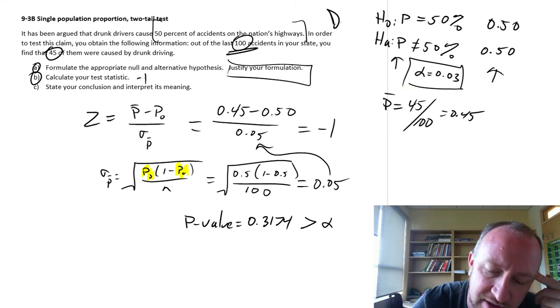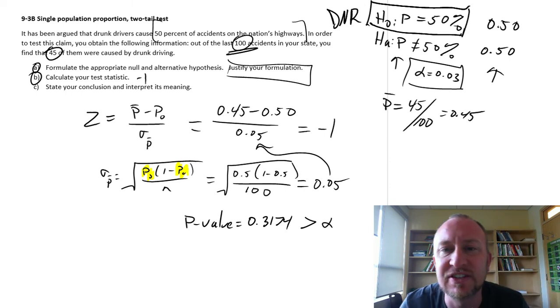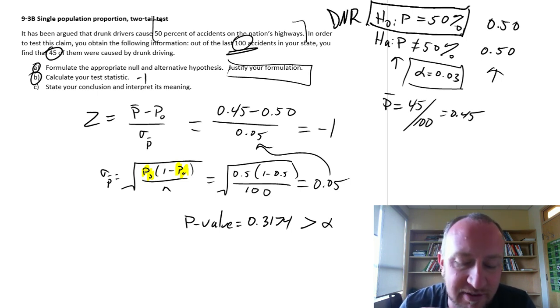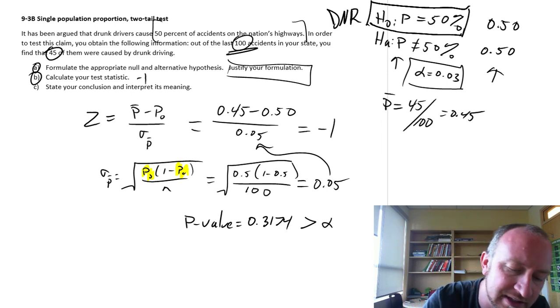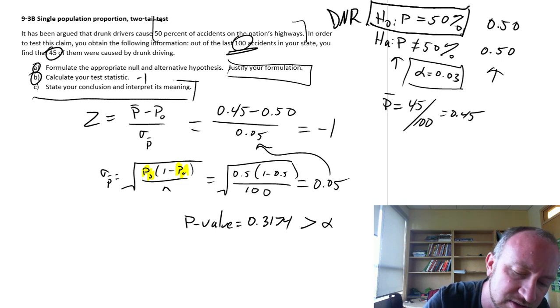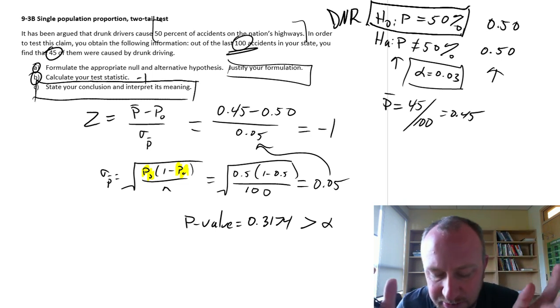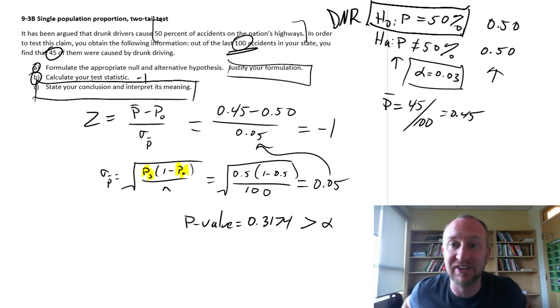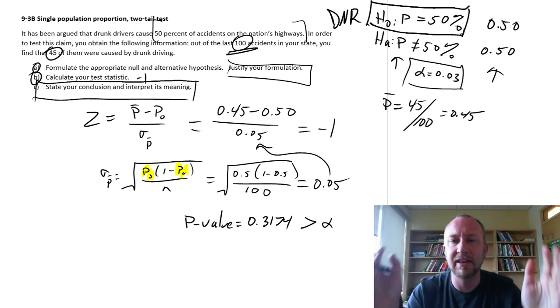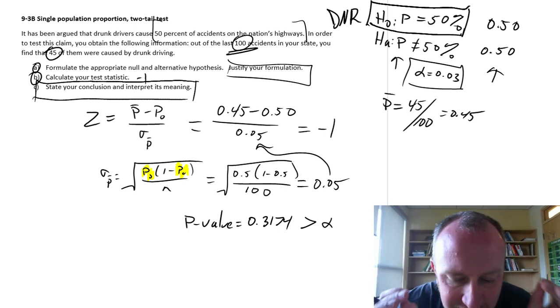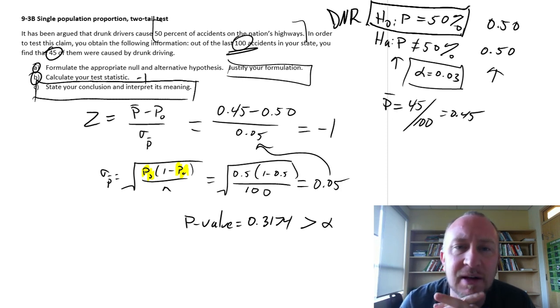So here, this is do not reject that null hypothesis. I have insufficient evidence to show that it is different from 50%. So our evidence does support the claim that's been made here. So that's it. We've got our conclusion, and we've interpreted that. The evidence is very weak for the alternative. It supports the null. It supports the claim that 50% of accidents are being caused by drunk drivers.